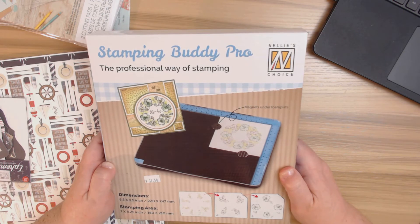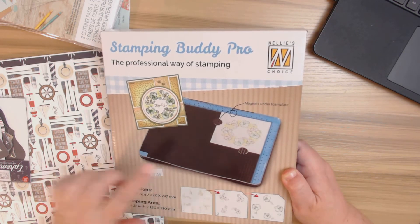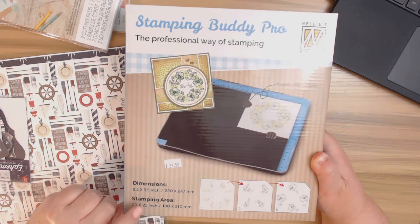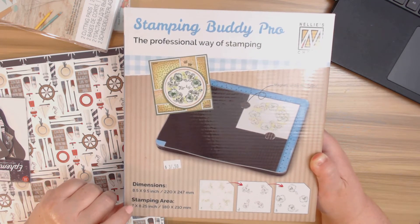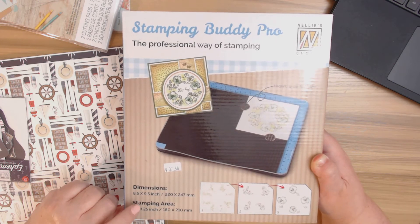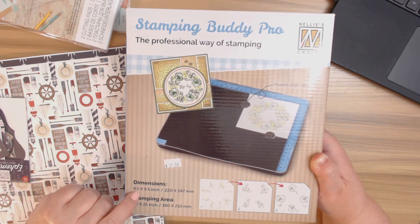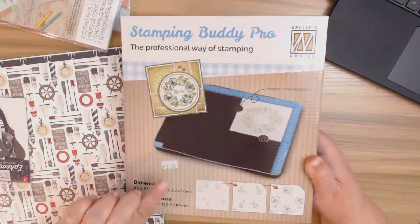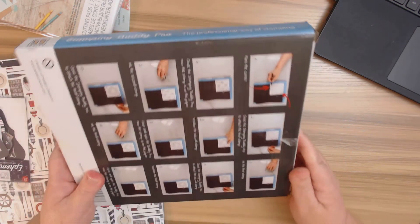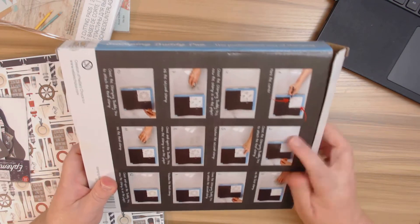And then also she has the Stamping Buddy Pro and this is a really cool stamp pad. What I love about it is that it was bigger than my other one. Actually I had a smaller one by We R Memory Keepers and it just disappeared. I don't know what happened to it, but it was 8.5 by 9.5 inches and I thought the price was really reasonable on this. This is $37.50 CAD.